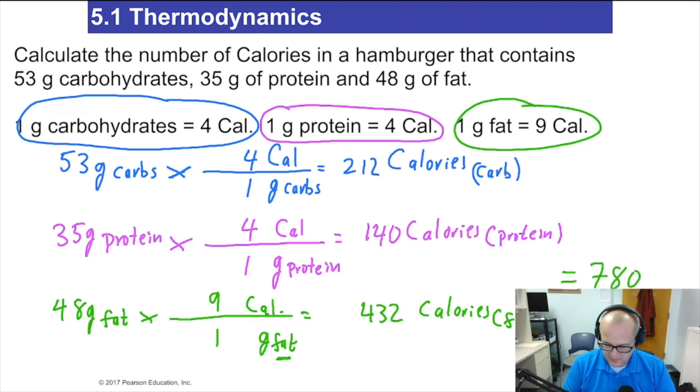780 calories. And that's how you'd calculate how many calories were in that beautiful, delicious, awesome, mouth-watering, very tempting, man I'm really hungry, hamburger. All right guys, this is the end of chapter 5.1. We'll see you in chapter 5.2. Good luck and good chemistry.